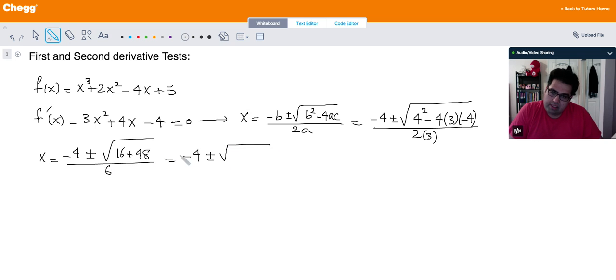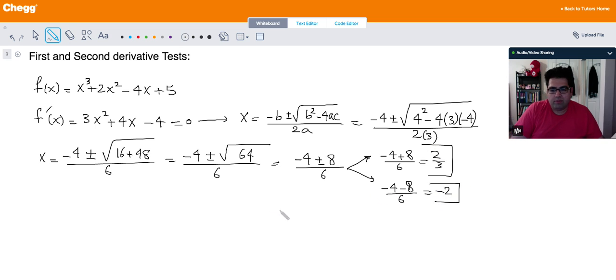So I have 16 plus 48 all over 6. So it's negative 4 plus minus, 16 plus 48, that's 58, and then 64, nice number, 6. So we get negative 4 plus minus 8 over 6. This gives me two values: negative 4 plus 8 divided by 6 is 2/3, and negative 4 minus 8 divided by 6 is negative 2. So I got two critical numbers or two extremas here.